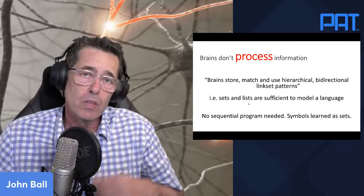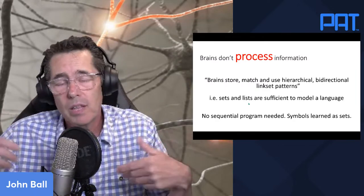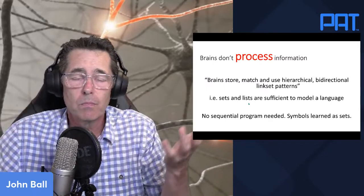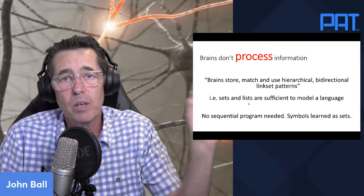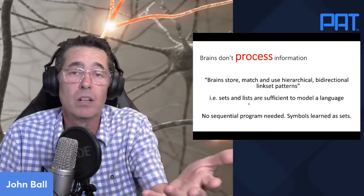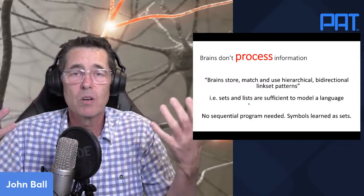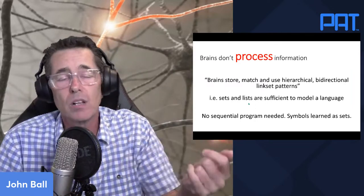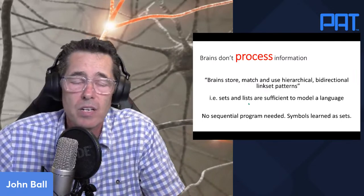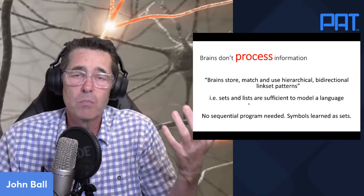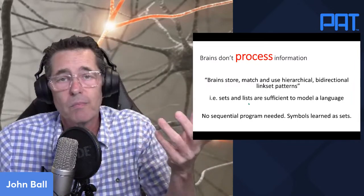How do I start talking about PADM theory? The first thing to talk about is how brains don't process information — they're matching patterns. People say you don't need to say that because processing covers everything. In the world today, if you go to a neuroscience area, there'll be a computational neuroscience department; in linguistics, a computational linguistics department; a computational psychology department. Anything to do with cognitive science usually has a computational model, and the problem is that brings in a lot of baggage. What PADM theory says is that all the brain is doing is storing, matching, and using hierarchical bidirectional link set patterns — meaning the brain can be comprised of simply sets and lists. There's no sequential program.